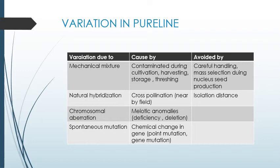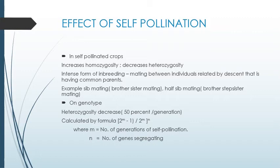Effect of self-pollination: in a self-pollinated crop, if a plant undergoes continuous selfing, it increases homozygosity and decreases heterozygosity. The concept of self-pollination helps increase homozygosity and decreases heterozygosity by 50% per generation. This can be identified by the formula: 2^m − 1 divided by 2^m, raised to the power n, where m is the number of generations of self-pollination and n is the number of genes segregating. Self-pollination is an intense form of inbreeding — inbreeding is a process of mating between individuals related by descent, having a common parent. Examples include sib mating (brother-sister mating) and half-sib mating (brother–step-sister mating).